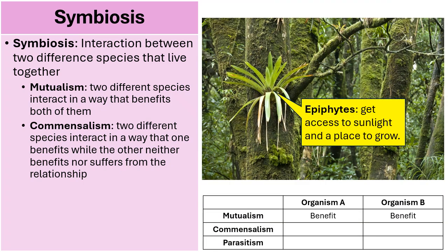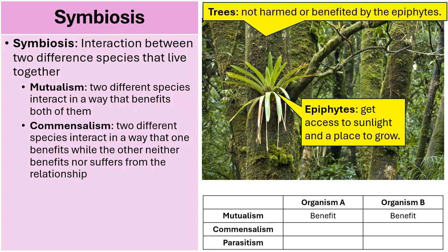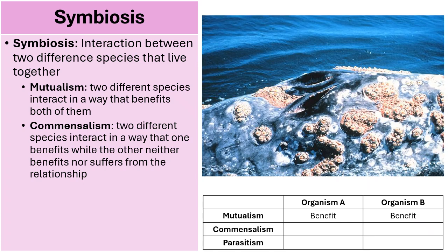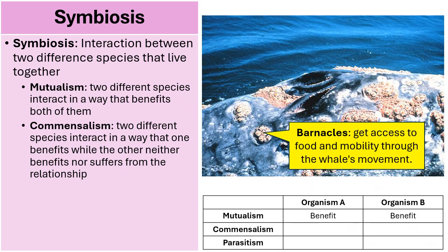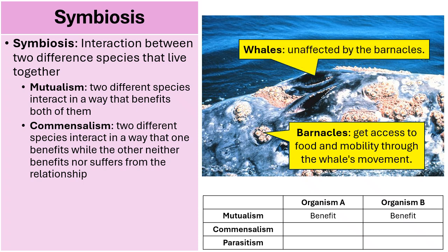Another example are air plants known as epiphytes — plants that live atop other trees. Epiphytes gain better access to sunlight because they are elevated and have a place to grow, but the larger tree they live upon is not harmed or benefited in any way; the epiphyte is not robbing nutrients from it. Yet another commensalistic example is barnacles that attach to whales: the barnacle benefits by getting access to food and mobility through the whale's movements, and the whale is unaffected. In the table, one organism benefits and the other is indifferent.